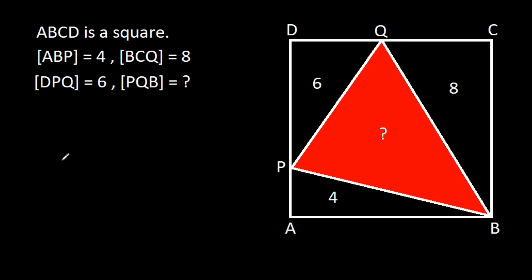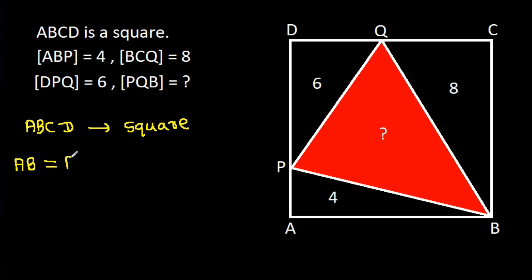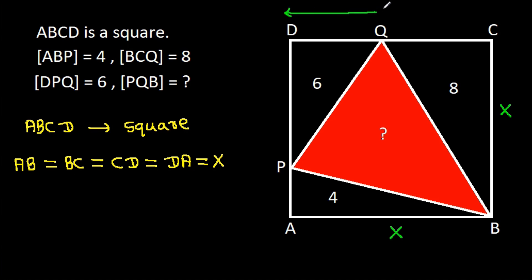We have given that ABCD is a square, that means AB will be equal to BC, it will be equal to CD, it will be equal to DA. Suppose AB is X, BC is X, CD is X, and DA is X.